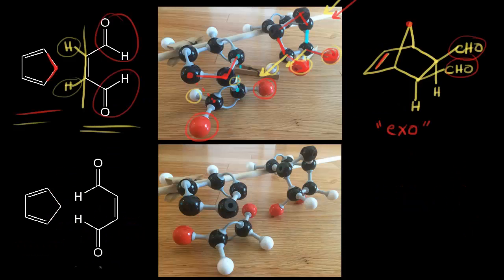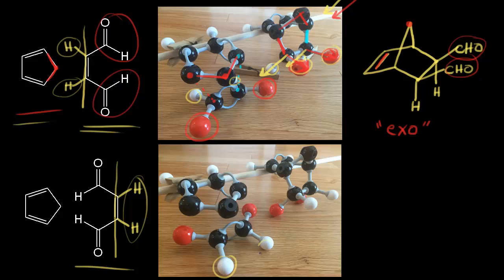What about if our dienophile approaches in the other direction? If we have our hydrogens on the double bond and draw a line, the stuff on the right side of the double bond ends up. So these two hydrogens are up. The aldehydes are on the left side, and when our product is formed we're looking this way — the aldehydes are going away from us in space, so the aldehydes are down.